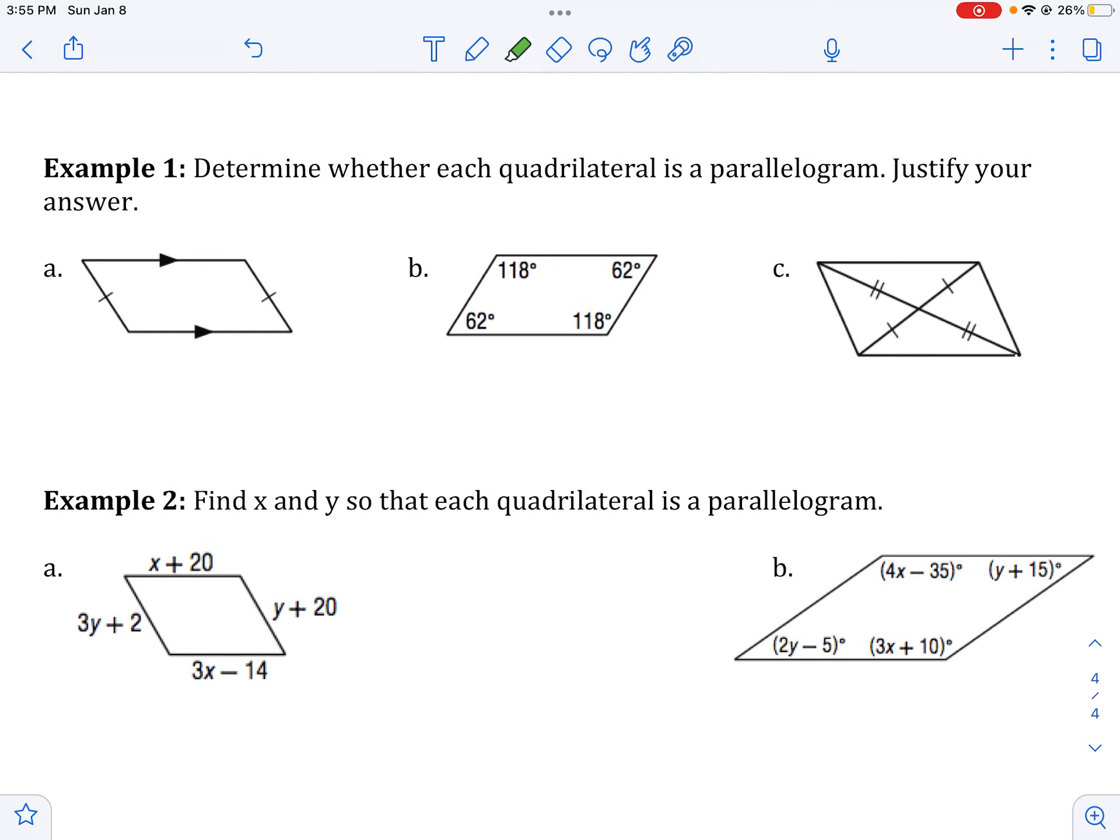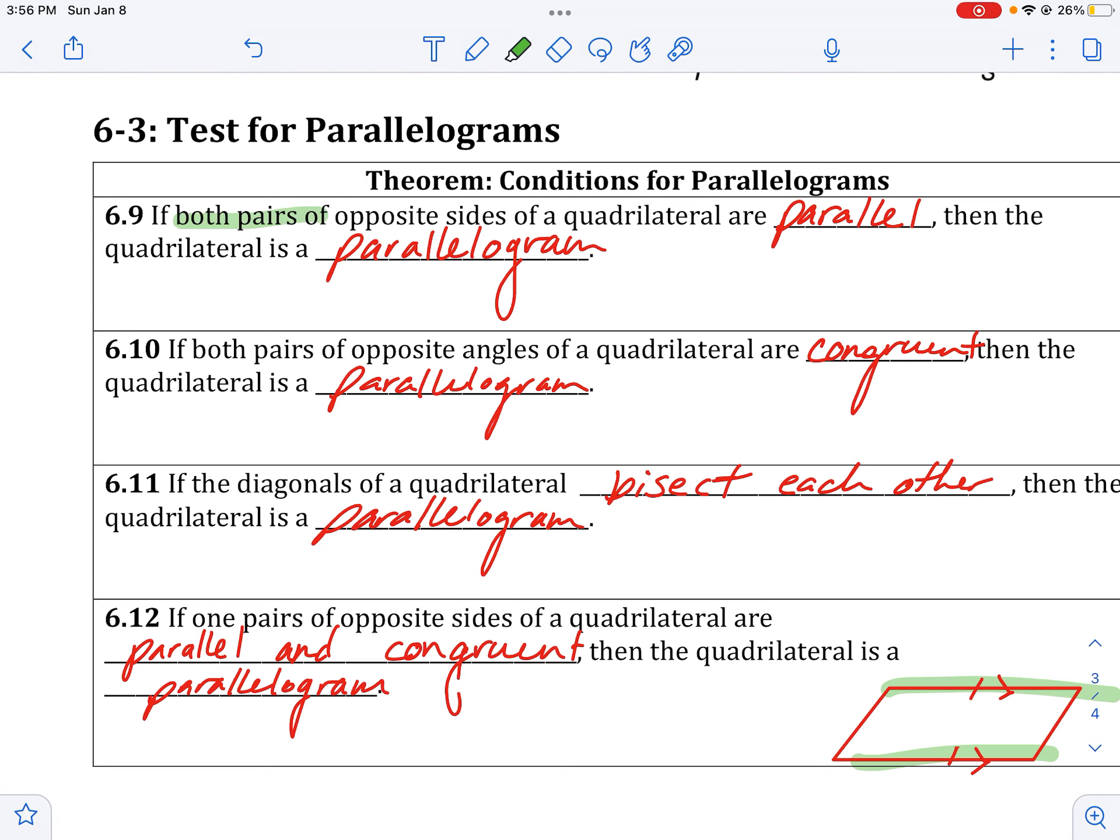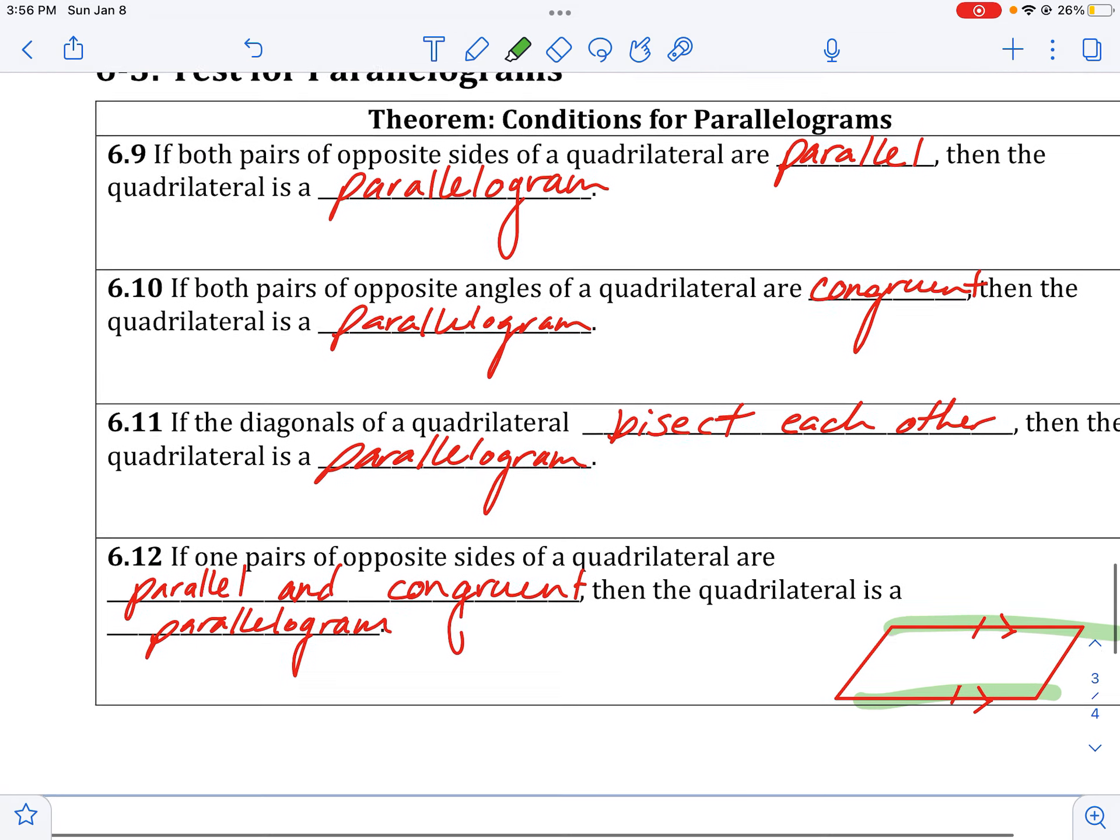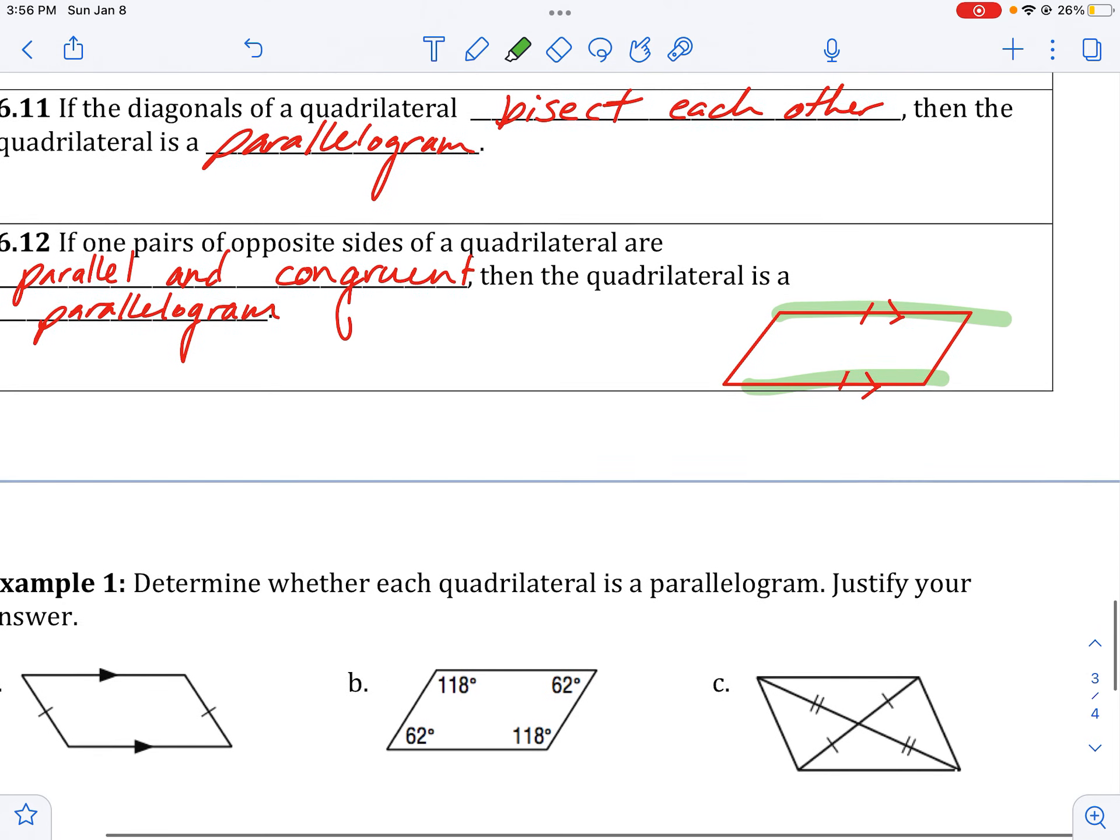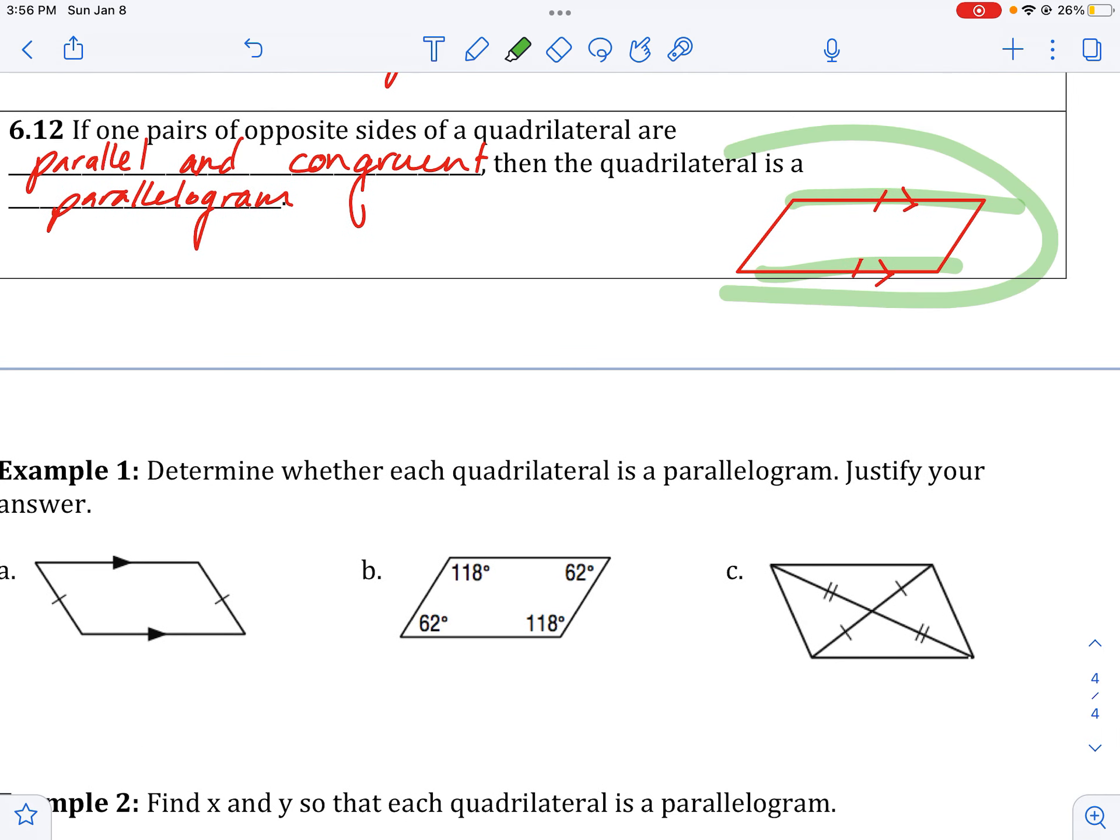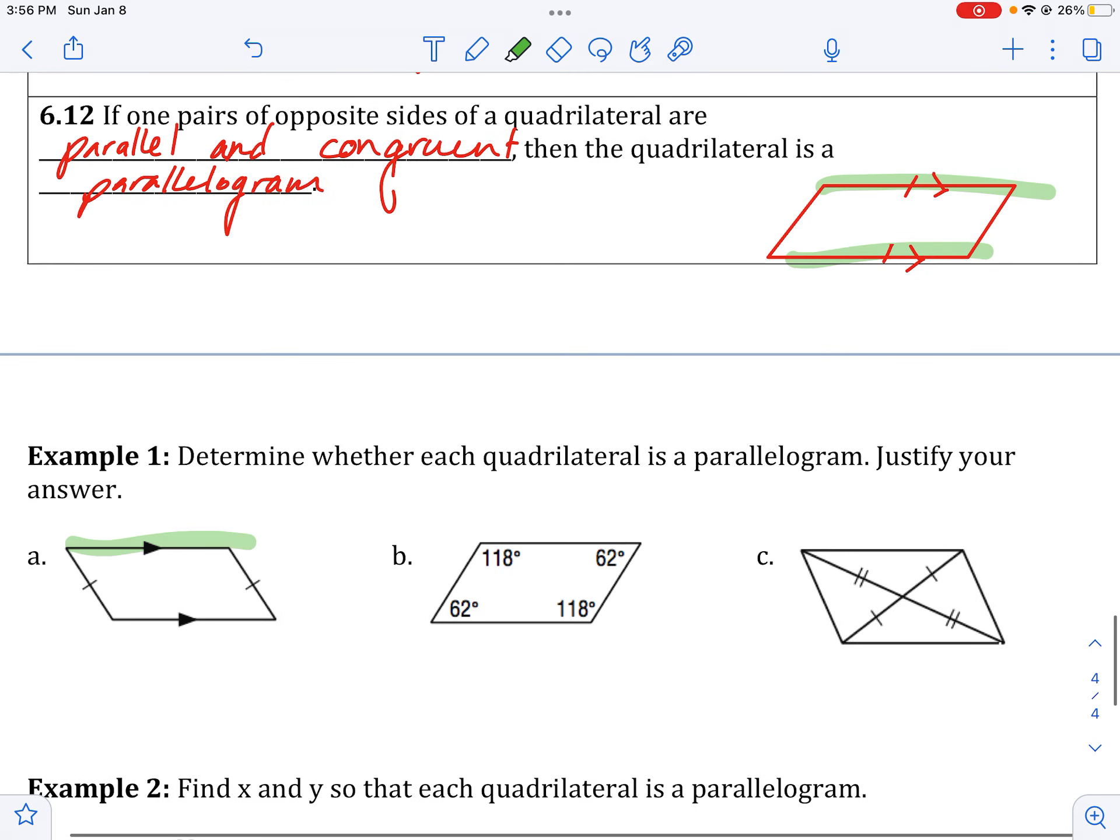Now, A can be kind of tricky. Notice that I have one pair of congruent opposite sides and one pair of parallel opposite sides. Now, our theorems say that I need both pairs to be parallel or both pairs congruent. Or, alternatively, I can have one pair that's both. But what I cannot have is one pair that's parallel and one pair that's congruent. Why not?